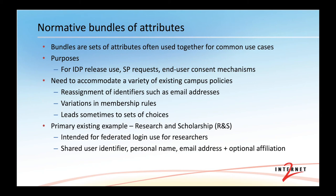Similarly, there are variations in how one defines affiliations. Sometimes these attribute bundles wind up being conditional, adding complexity to the system. The primary existing example — very widespread but not widespread enough — is Research and Scholarship, R&S. It's intended for federated login use for the research community. It consists of a shared user identifier, a personal name, an email address, and an optional affiliation. So you can see it's identity-rich.